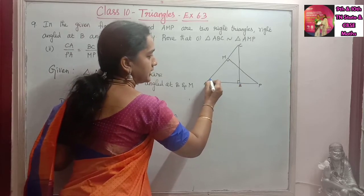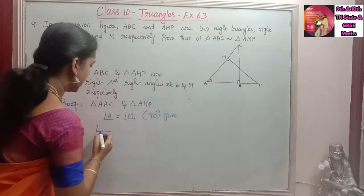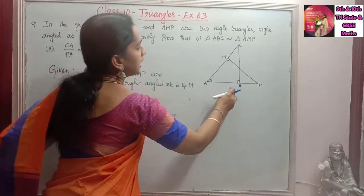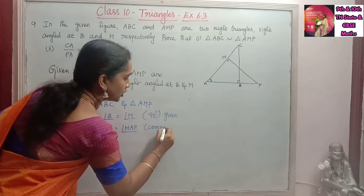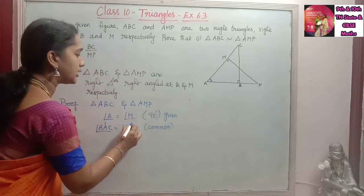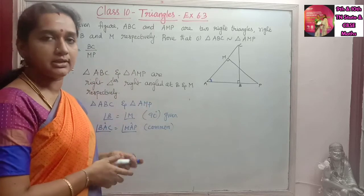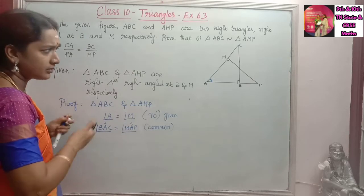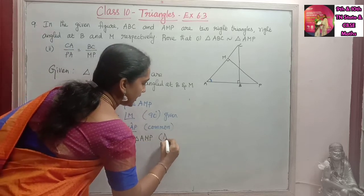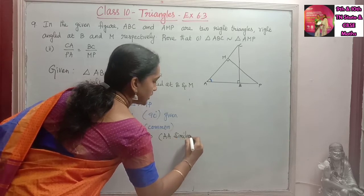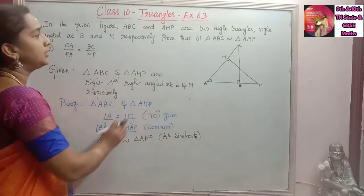Then, considering triangle ABC and triangle AMP, other than the right angle, we have a common angle A. This angle A is common to both the triangles, so angle BAC is equal to angle MAP — common to both triangles. So two angles are the same: one is 90 degrees, and angle A is common to both triangles. Therefore by AA similarity, we can say that triangle ABC is similar to triangle AMP. Both triangles are similar by AA similarity.